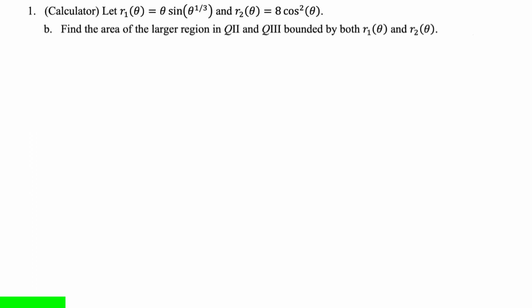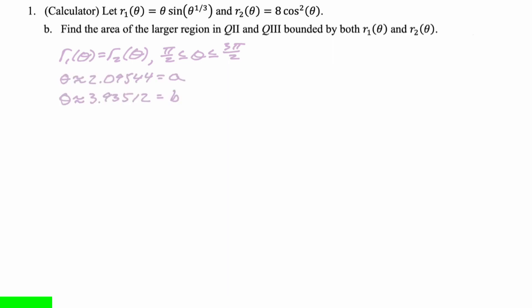We had to figure out where the curves intersected between pi over 2 and 3 pi over 2. The calculator gave us A = 2.09544 and B = 3.93512. We write the definite integral: one-half times the integral from A to B of R2 squared minus R1 squared d-theta. Our calculator gave us the answer 27.636.